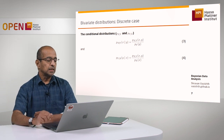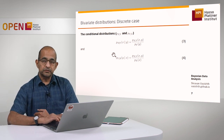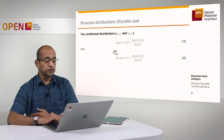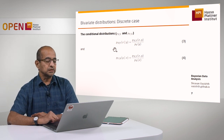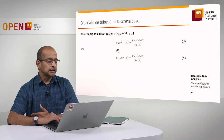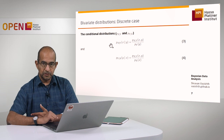The other thing you can compute with a joint probability mass function is the conditional distribution of x given y, and the conditional distribution of y given x. How does that work? The formula is the definition of conditional probability.